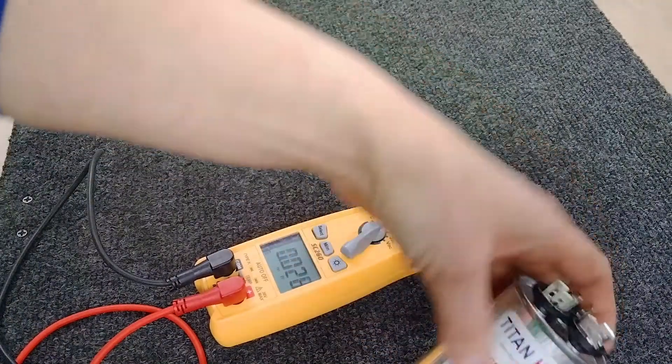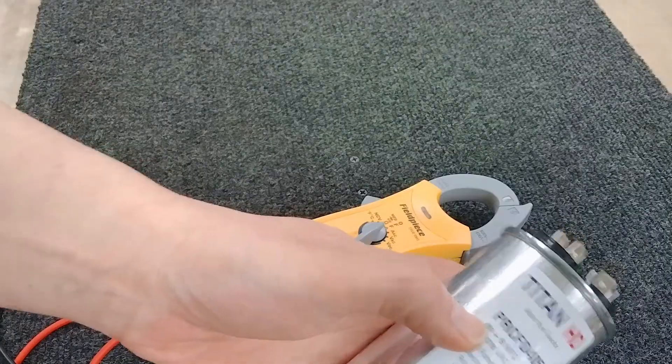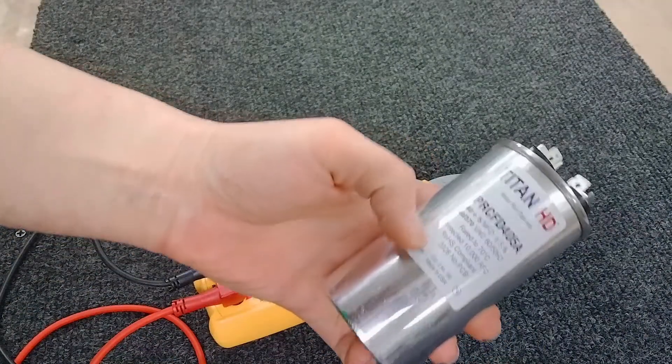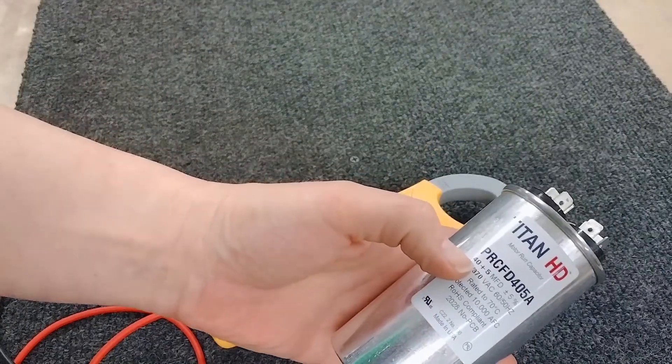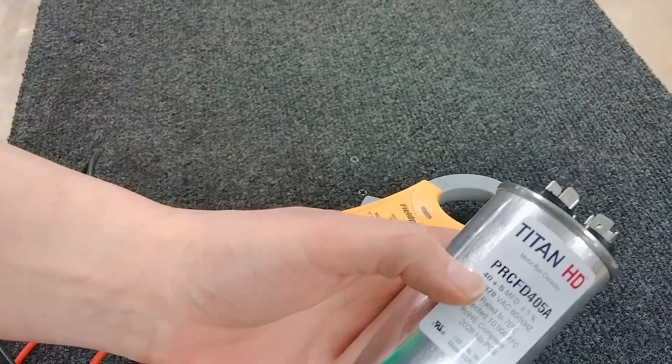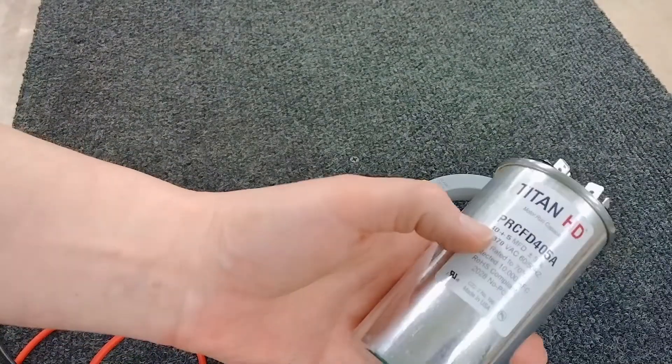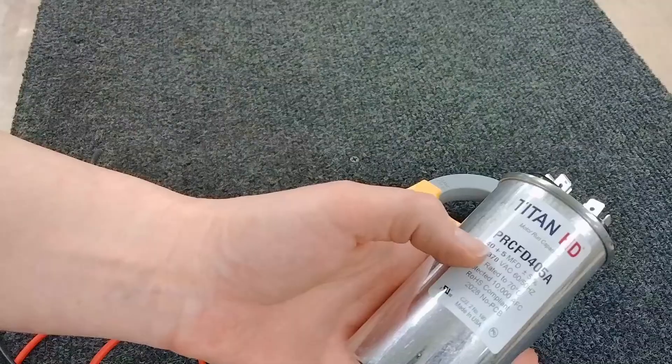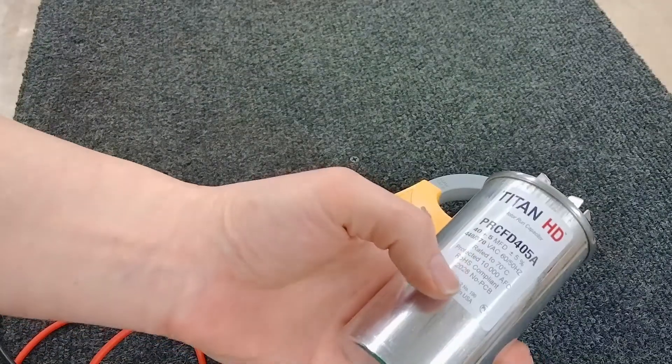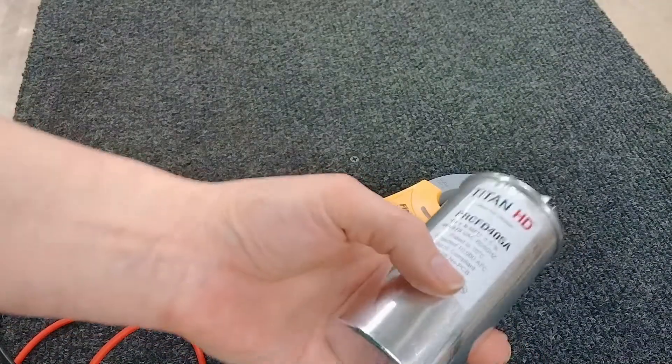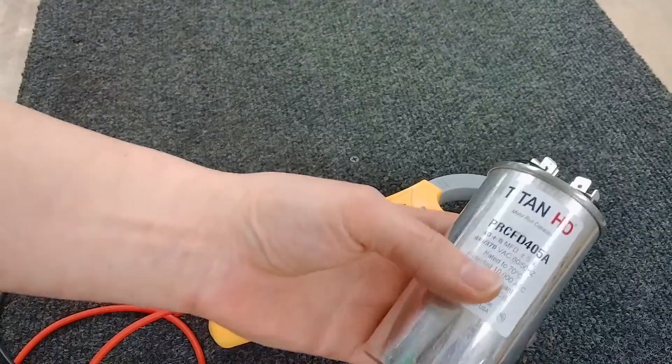For example, this capacitor I pulled off the shelf should be good. If it were reading say 20 out of 40, an analog meter isn't going to show that. It's just going to let you know that it's holding capacitance, but it can still be causing the problem.